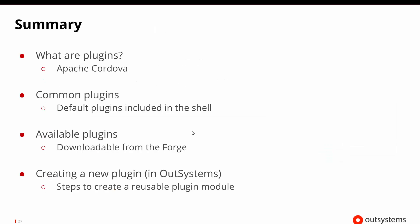In this section we talked about what the plugins are, went over some of the common plugins available by default in the shell, looked at what's available from the forge, and how you could go ahead and create your own. There's one other scenario where you might want to create a plugin that has never existed before — in that case you might need to write the real code and go through the Cordova approach to build something like that. But once Cordova has it as a registered plugin, it's very easy to wrap that and make it available inside of OutSystems.